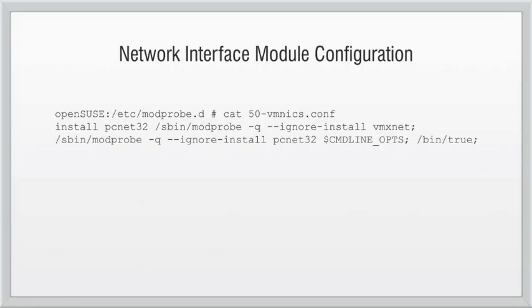After the system is booted, you need to check your module configuration file and verify that the appropriate kernel module was loaded for your network interface and that an alias has been created for the new network board. The file you need to check depends on which distribution you're using. Some distributions use /etc/modprobe.conf or /etc/modules.conf; others use a configuration file in the /etc/modprobe.d directory. In this example, within /etc/modprobe.d there is a file called 50-vmnix.conf, which specifies which kernel modules need to be loaded to support the network board.